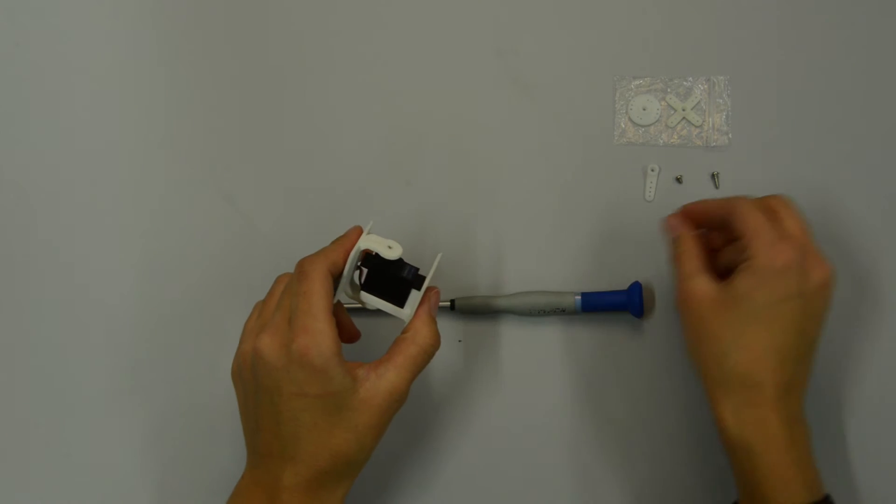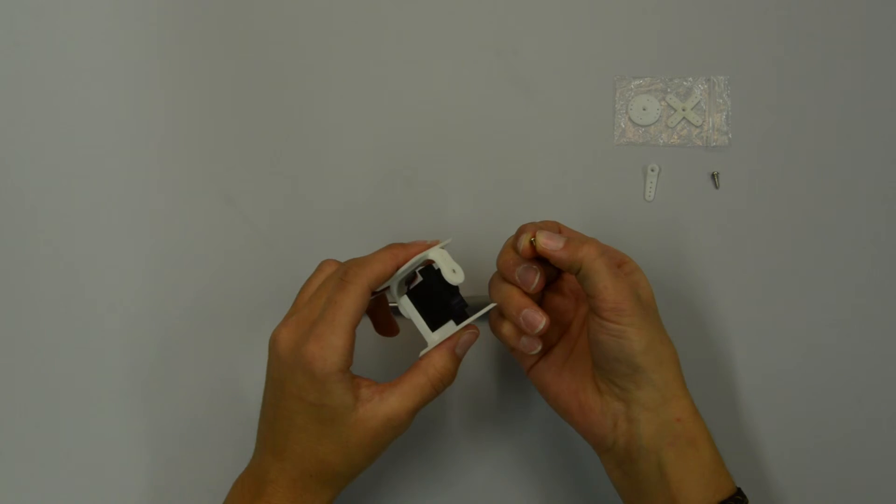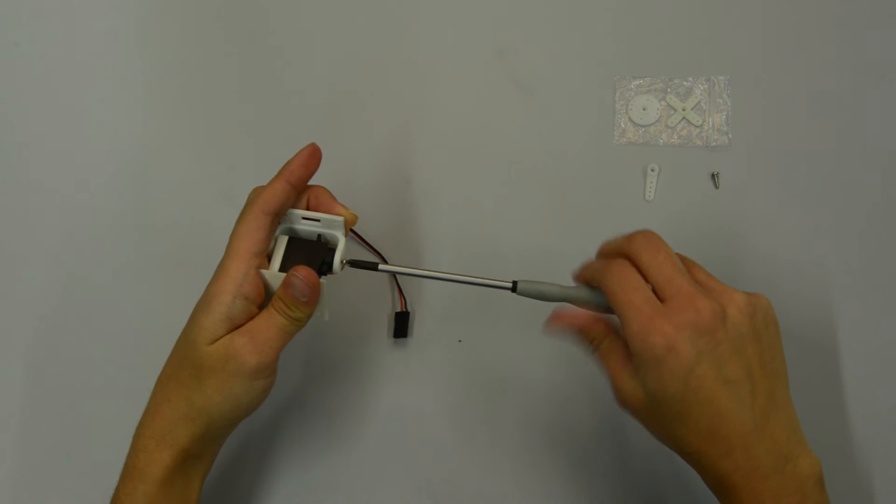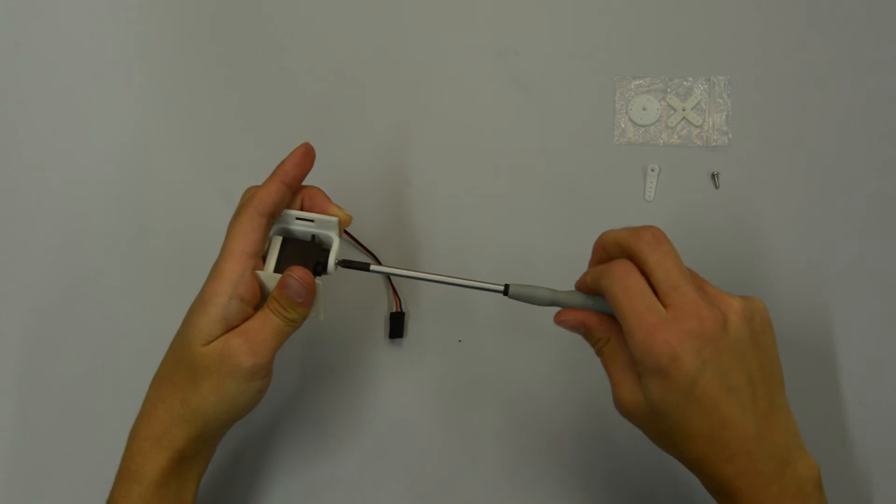Then, secure the parts with the screws. The short screw with smaller threads goes into the servo shaft, and the longer screw secures the body of the servo to the servo holder part.